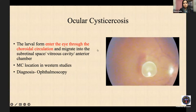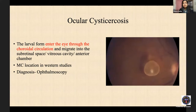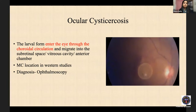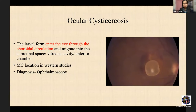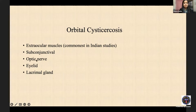The cyst enters through choroidal circulation into the subretinal space and vitreous cavity, and is easily diagnosed by indirect ophthalmoscopy. That is one reason it was diagnosed more frequently before advanced imaging. Orbital cysticercosis most commonly involves extraocular muscles, particularly the superior rectus. Other locations include subconjunctival, and rare locations such as the optic nerve, lacrimal gland, and eyelid.